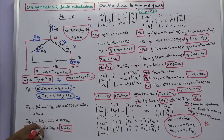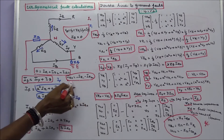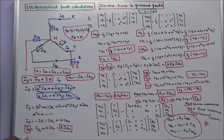Since minus IR1 minus IR2 equals IR0, therefore IF equals IR0 plus 2 IR0, which equals 3 times IR0.